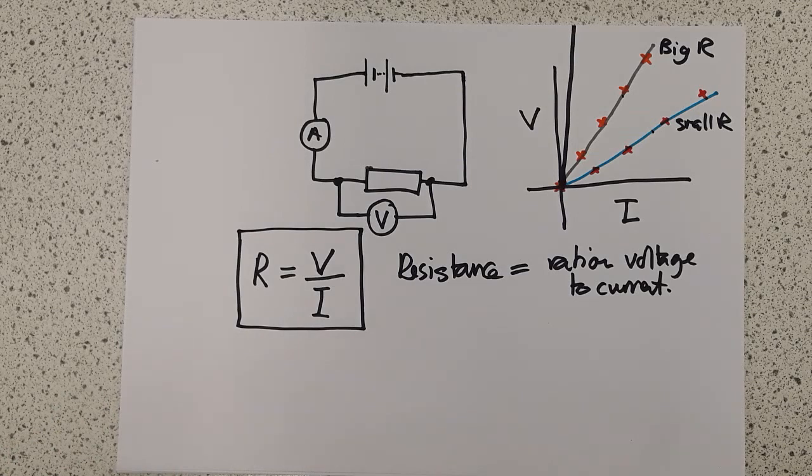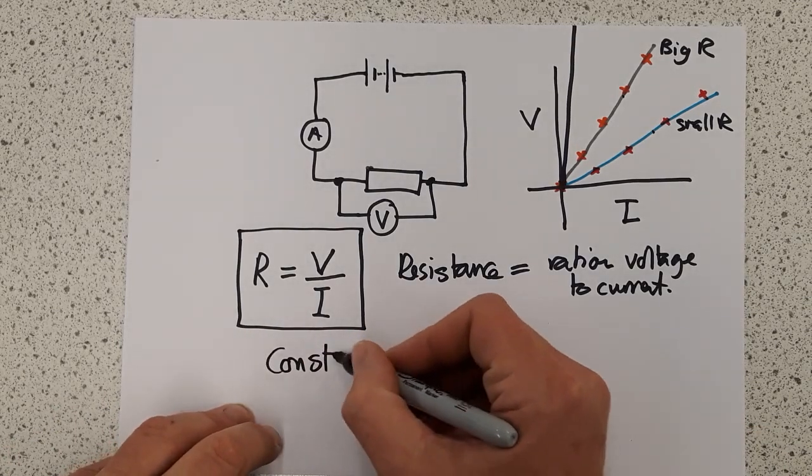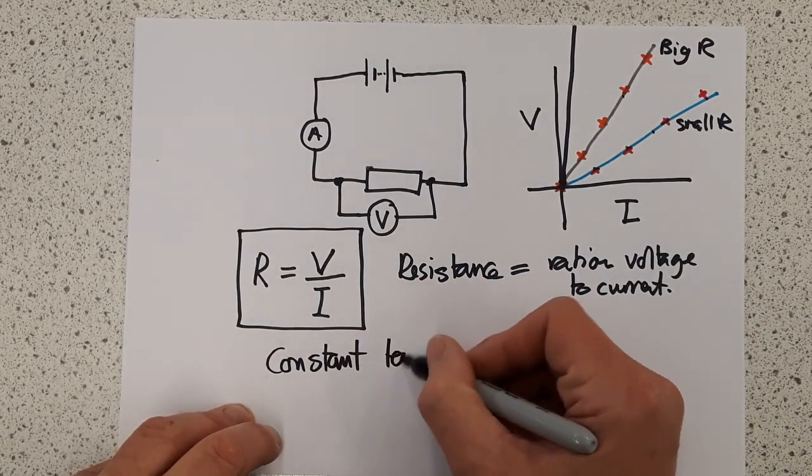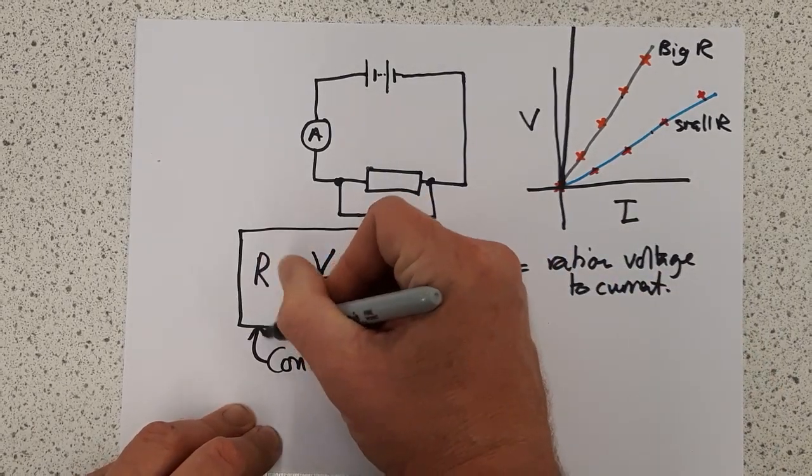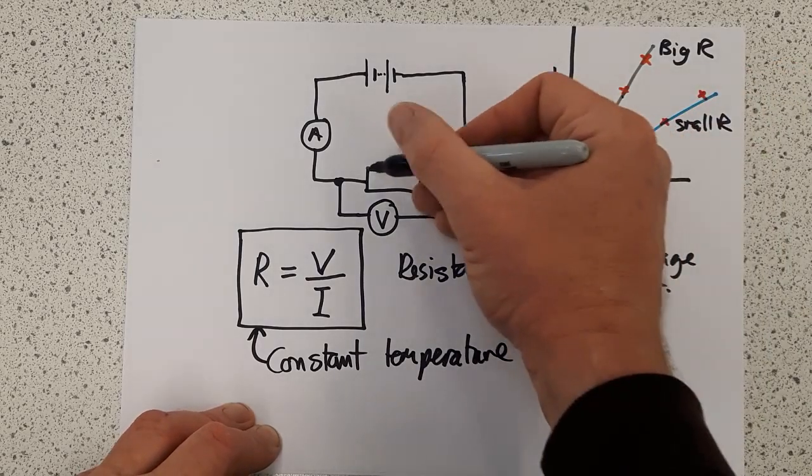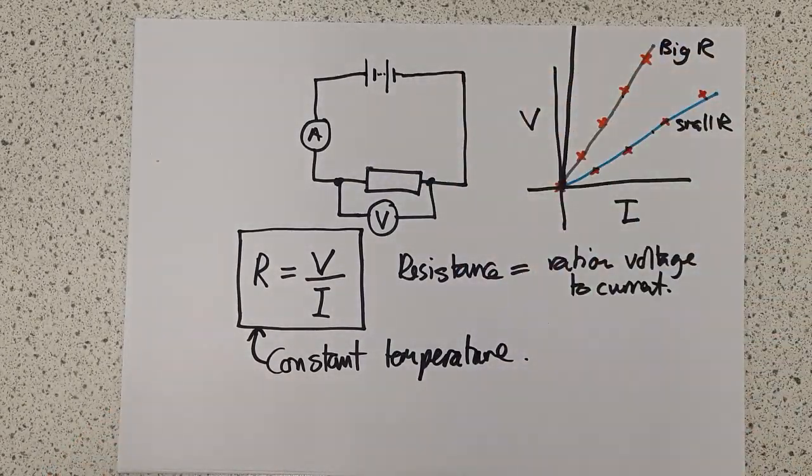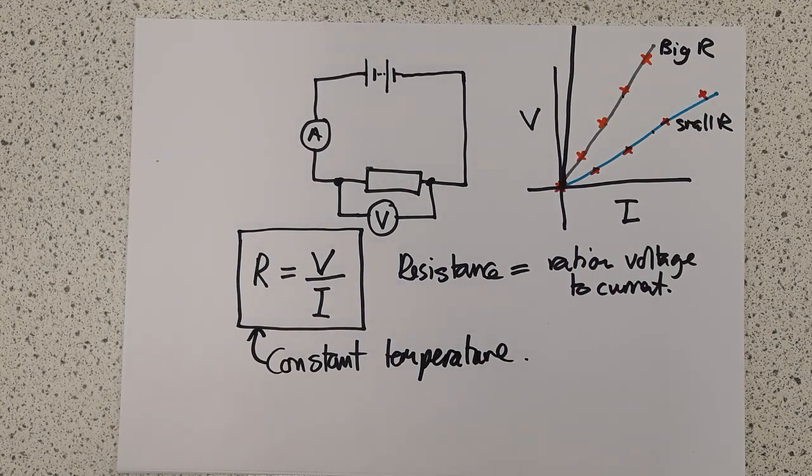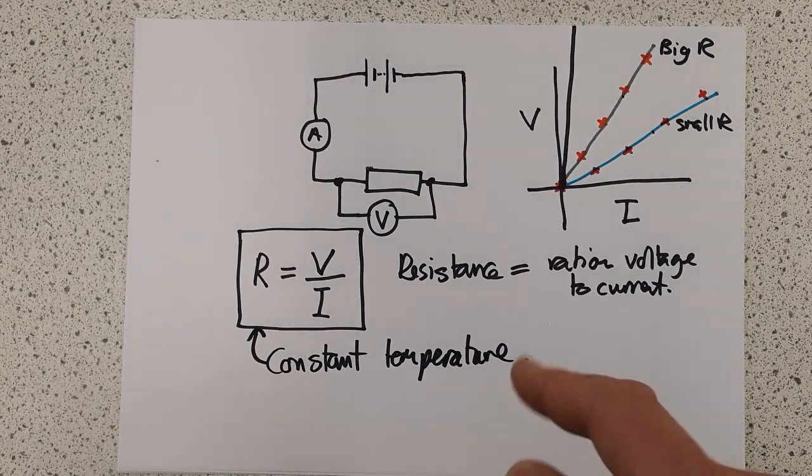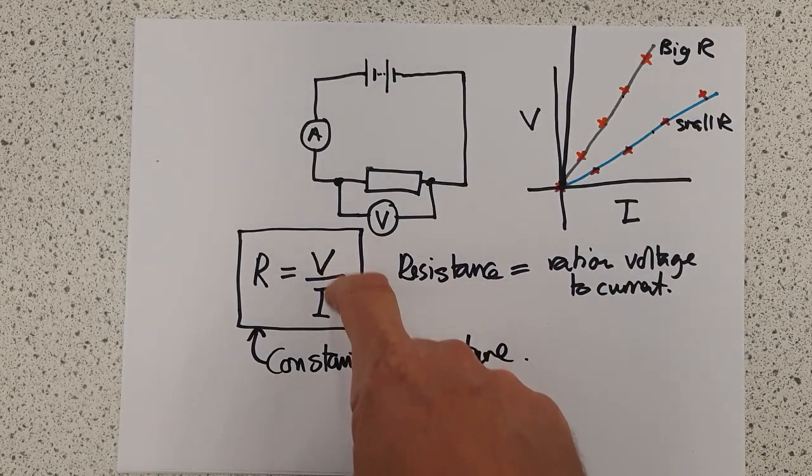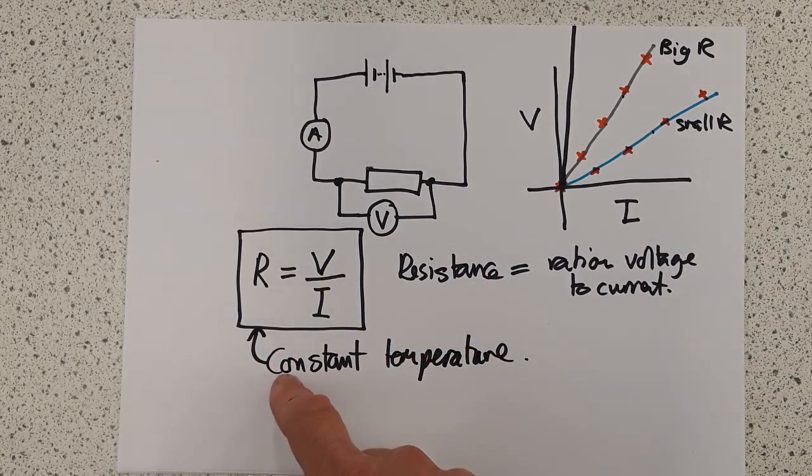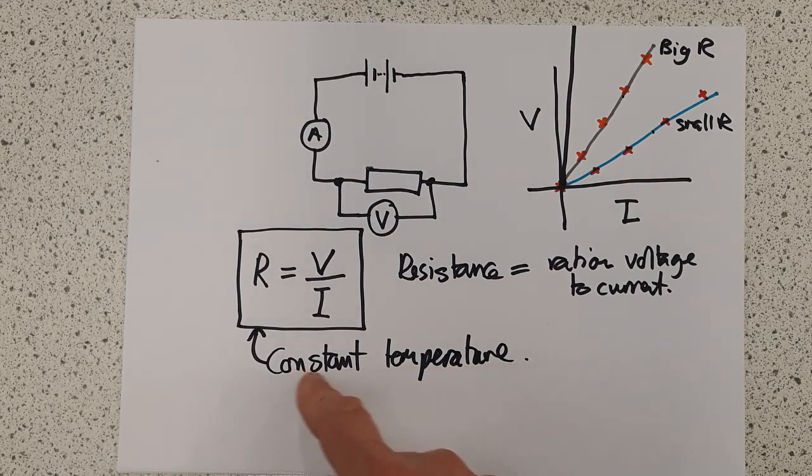Now this only works at a constant temperature. So this is our proviso. We will only get a straight line graph if the resistance itself stays at a constant temperature. And that can be quite difficult to do because as electrons pass through, they tend to warm things up. So Ohm's law states that the ratio between voltage and current is constant so long as the temperature remains constant.